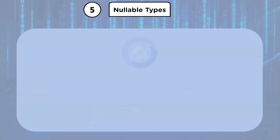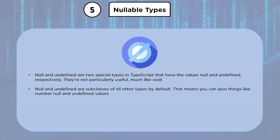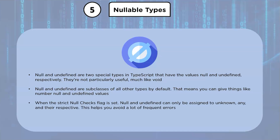Null and undefined are two special types in TypeScript with the values null and undefined respectively. Like void, null and undefined are subclasses of all other types by default, meaning you can assign null and undefined values to things like numbers. When the strictNullChecks flag is set, however, null and undefined can only be assigned to unknown, any, and their respective types. You can use them as a union type like string | null | undefined.